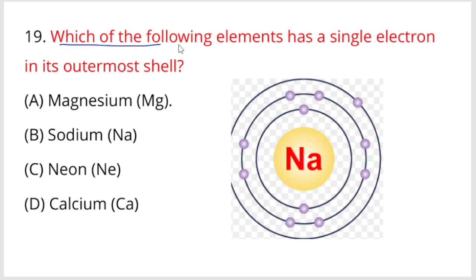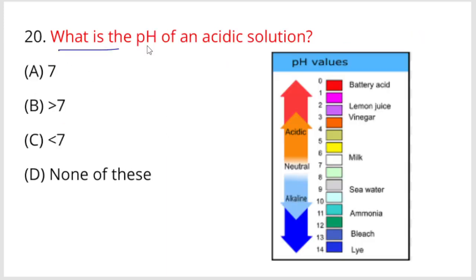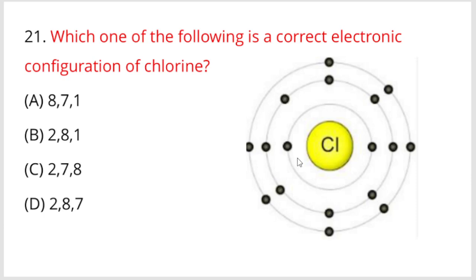Next, which of the following elements has a single electron in its outermost shell? Sodium Na, option B, is the right answer. Next, what is the pH of an acidic solution? Acidic solution pH is less than seven. Next, which one of the following is a correct electronic configuration of chlorine? Option D, 2-8-7, is the correct electronic configuration.